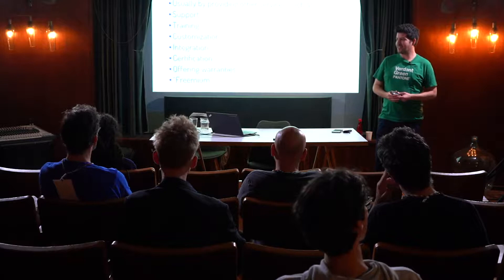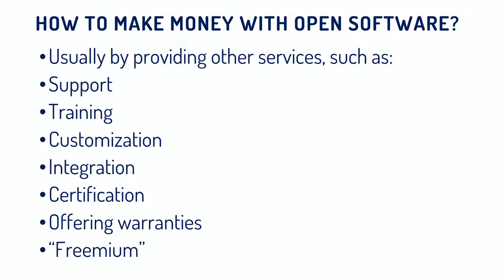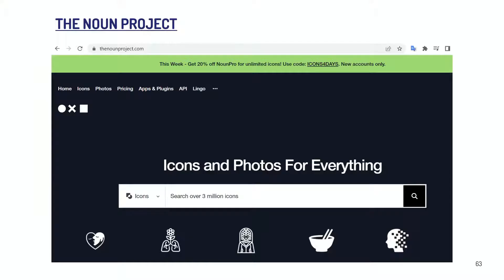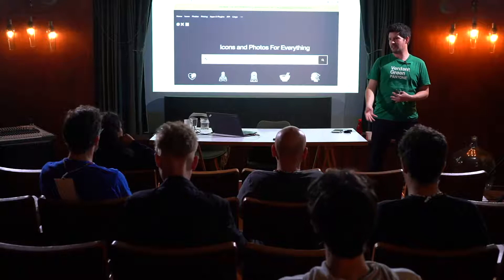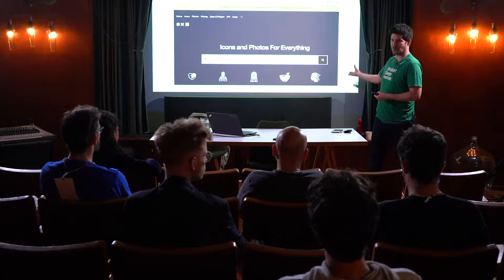One way to make money is through the concept of 'freemium,' mostly used in app games — they give you the game for free, but if you want more coins or lives, you pay. The Noun Project is a database of icons licensed under CC; you can find and use icons for free, but if you want commercial use, you know how much to pay. Another example is Open Desk, where you can download furniture models and contact local makers. Cards Against Humanity was launched with a CC license — you could download it for free, which helped it spread, and then people got addicted and bought the physical cards.